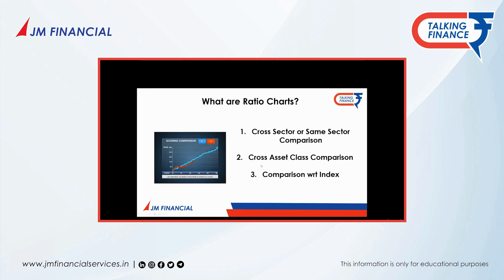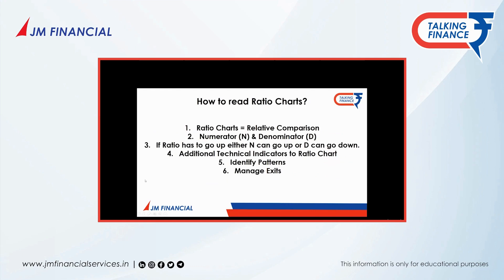How to read ratio charts? We have seen how to plot them. To explain it simply: ratio charts are about relative comparison. If Ram and Shyam are two brothers, Ram scores 90 out of 100 and Shyam scores 80, then Ram's marks are better. When there are two things, you can compare them. So ratio charts are relative.